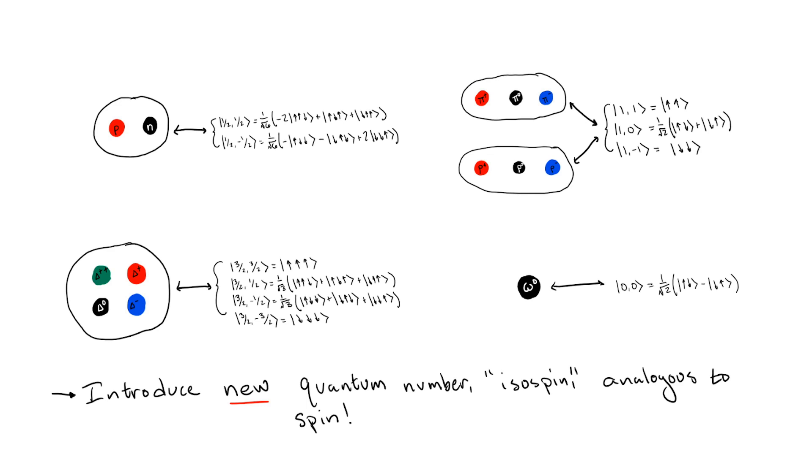For example, the three spin zero negative parity pions can be collected into a triplet with total isospin one, in direct analogy to the bosonic total spin one triplet of states. Similarly, the three spin one negative parity rho mesons can be rounded up into another triplet of total isospin one, while the single spin one negative parity omega meson can be considered as a singlet with total isospin zero.